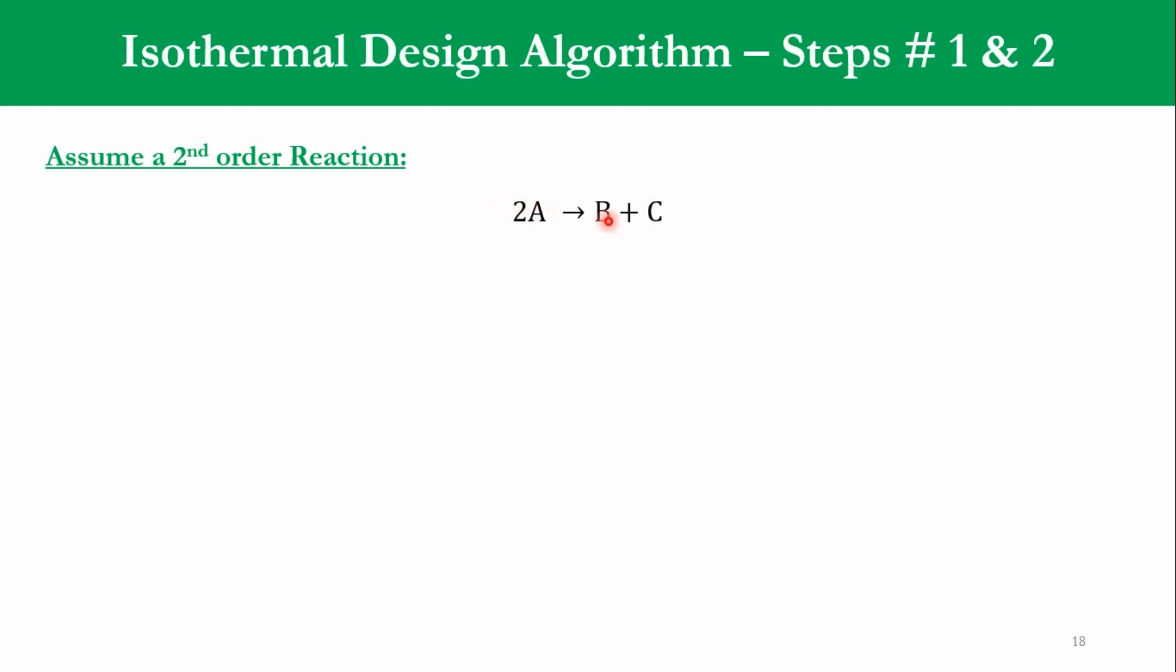So once we move to the isothermal design algorithm, the first two steps: let's assume a second order reaction that 2 moles of A goes to B plus C in an irreversible manner. According to the mole balance, we will take the differential form of equation FA0·dX/dW = -r'A. If you remember our initial lectures, that for plug flow reactor we will take -rA, but the units of volume are replaced by the weight of catalyst. As you can see, units of -r'A are moles per gram of catalyst per minute. And accordingly, rate law is -r'A = k·CA².